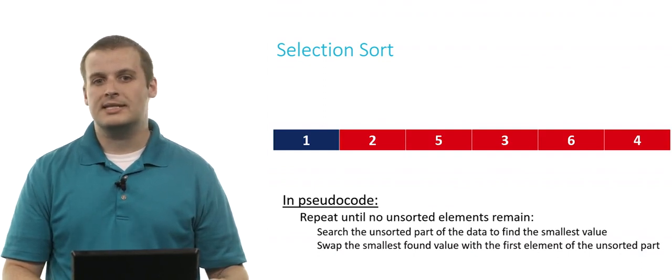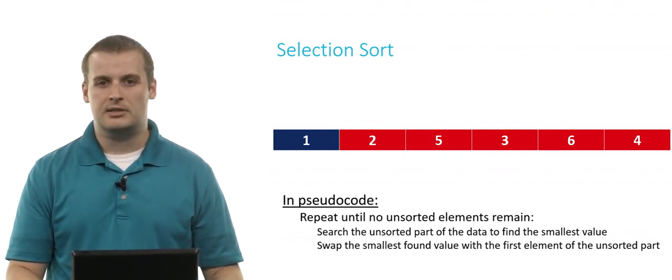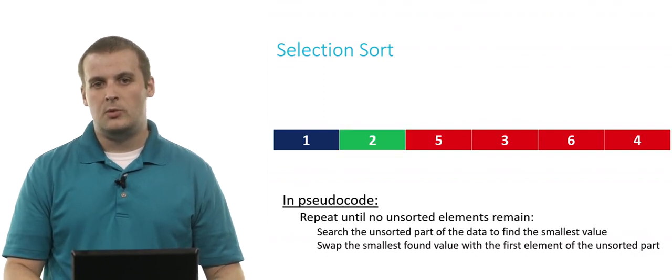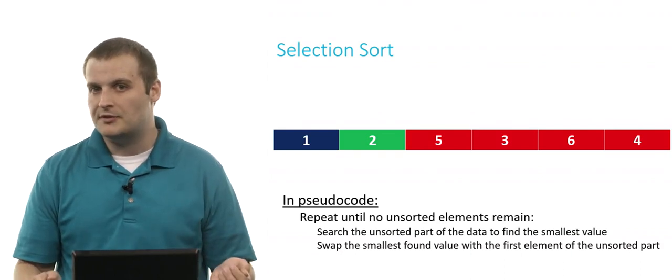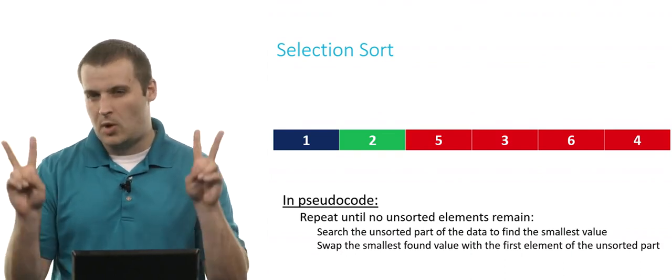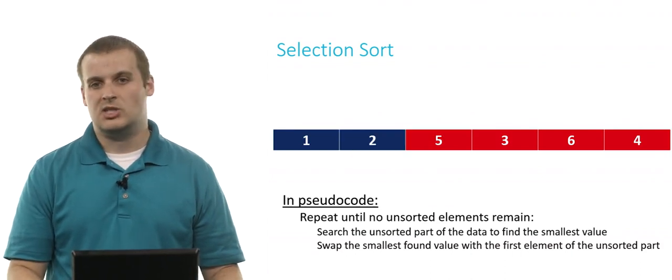Now we just repeat the process again. We search through the unsorted part of the array to find the smallest element. In this case, it's 2. We swap that with the first element of the unsorted part. In this case, 2 also happens to be the first element of the unsorted part, so we swap 2 with itself, which really just leaves 2 where it is, and it's sorted.